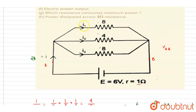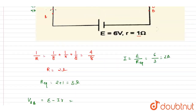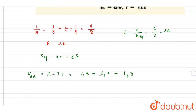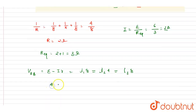Now if I talk about the currents i1, i2, i3 — the potential difference across all three parallel resistors is VAB. We can write VAB = e − ir. Since all resistors are connected between A and B, we have i1 × 8 = i2 × 4 = i3 × 8. With e = 6 and i = 2, VAB = 6 − (2 × 1) = 4 volts.